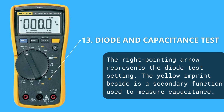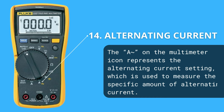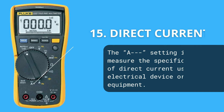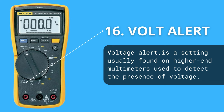This is the symbol for testing diodes and measuring capacitance. The following symbol is used to measure AC current. Here we have the symbol for measuring direct current. And the last symbol in the series is for notification of the presence of voltage.